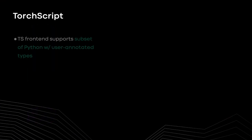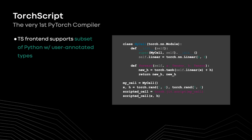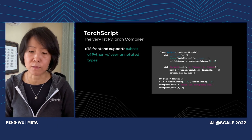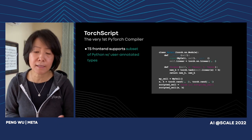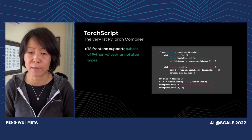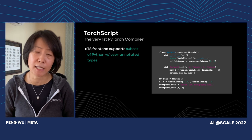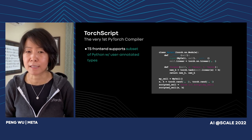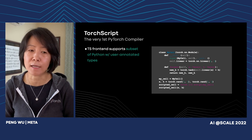Before we introduce the new technology, let me give some background on the past technology. Our very first PyTorch compiler is called TorchScript, which is widely used. TorchScript is a domain-specific language that supports a subset of Python, and it requires users to annotate PyTorch models with some types and regions so that the compiler is able to capture graphs out of models. In simple examples it's easy to use, but in real complex models the amount of annotations required is proportional to the size and complexity of the model.